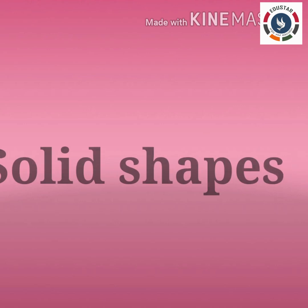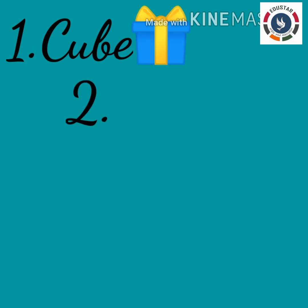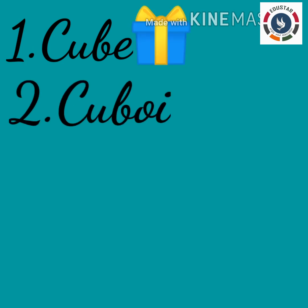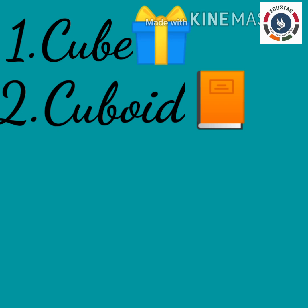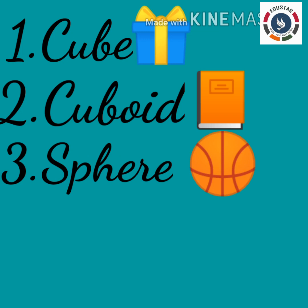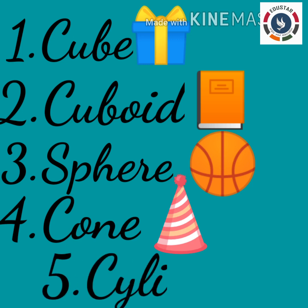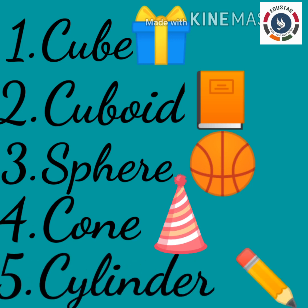Now we are going to learn the spellings of solid shapes. First: C-U-B-E — Cube. Second: C-U-B-O-I-D — Cuboid. Third: S-P-H-E-R-E — Sphere. Fourth: C-O-N-E — Cone. Fifth: C-Y-L-I-N-D-E-R — Cylinder.